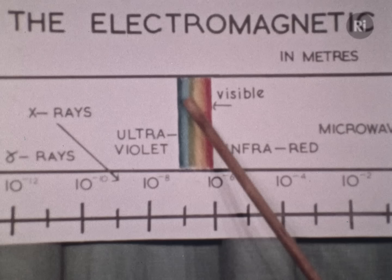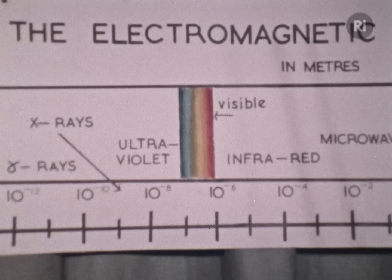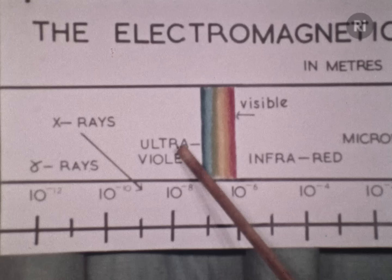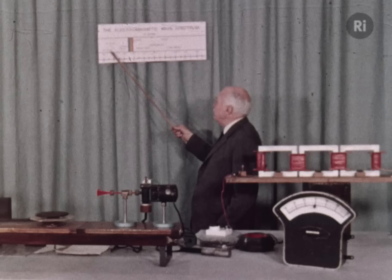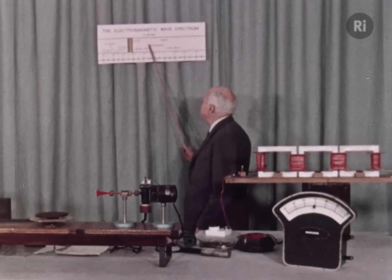Blue light is about half as long as red light. Beyond that there's also light but we can't see it — that's called the ultraviolet. And beyond that again we get still shorter waves: soft and then hard X-rays, and then what's called gamma rays from radioactive substances. Beyond that again, still shorter ones that come in the cosmic rays. So there then is the range of electromagnetic waves that we're going to consider.